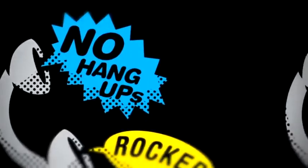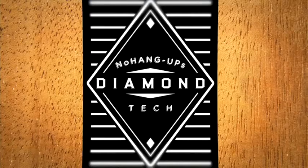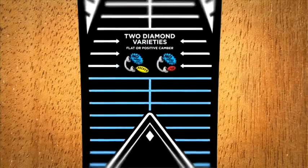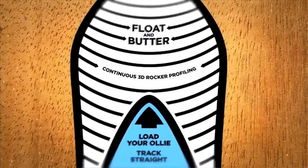No Hangups Camber comes in two different varieties: No Hangups Rocker and No Hangups Pop. The difference is, in No Hangups Rocker, the diamond extends 2 centimeters short of the contact point.